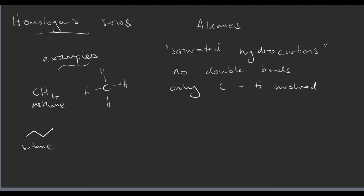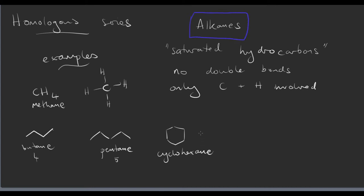This is butane. Or I could have pentane, which has five carbon atoms — butane has four. I could have cyclohexane. So these are all alkanes, and we're going to spend a little bit of time looking at these. As I said, they're the most simple of all of the homologous series.